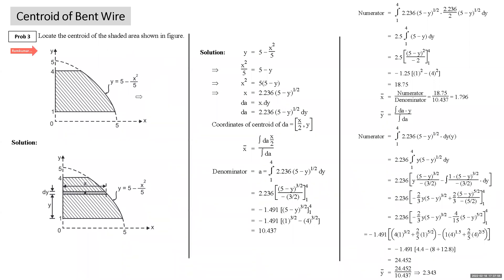The third problem: locate the centroid of a shaded area resting on the y-axis, ranging from y = 1 to y = 4. Since the area rests on the y-axis, we take the elemental strip horizontal — of width x and thickness dy at distance y. The equation of the curve is y = 5 − x²/5. Rearranging for x: x² = 5(5 − y), so x = 2.236·√(5 − y). The elemental area dA = x dy.